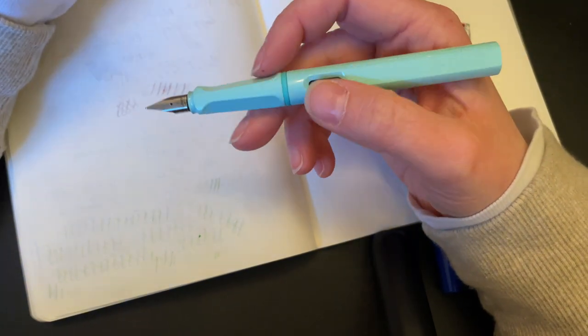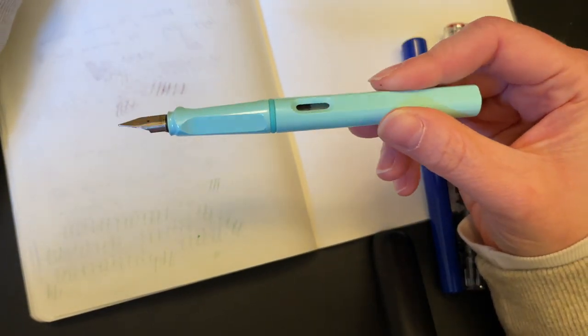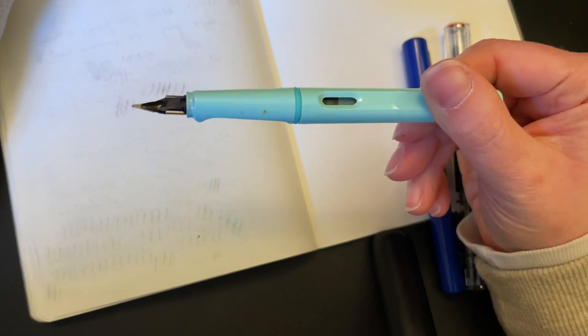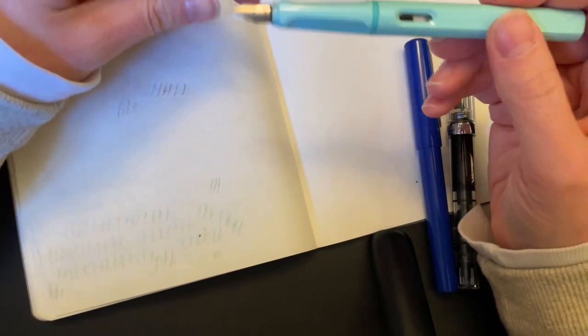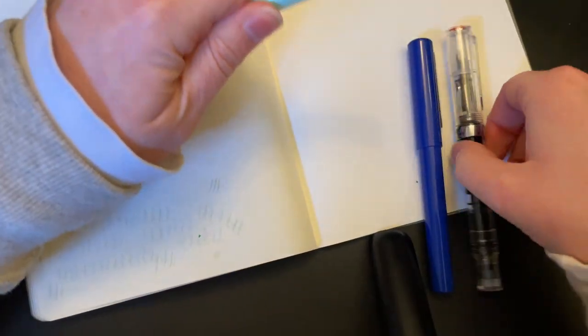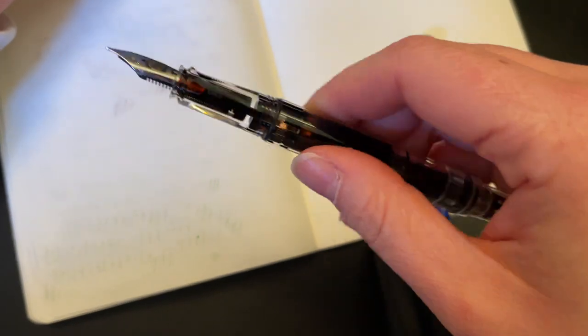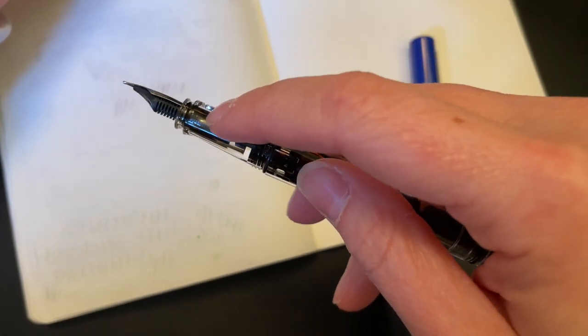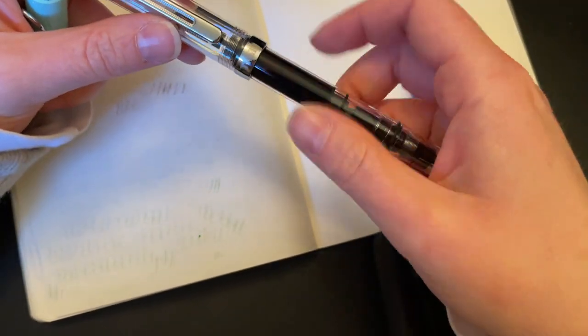The Lamy Safari and All-Stars are probably the most popular one that has that grip section. But I feel like the Eco-T is probably not far behind. It is difficult to see the triangle grip because it is clear, but I feel like this pen is going to be quite popular.